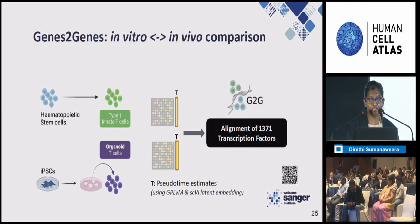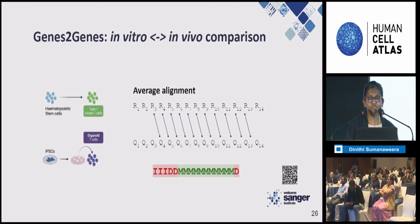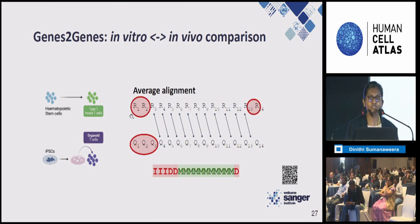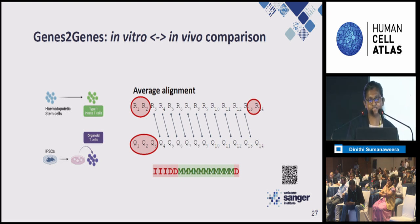We aligned these two datasets in terms of 1,371 transcription factors to find gene-level alignments. The average alignment across time points shows a mismatch at the beginning and at the end between the in vivo and in vitro systems. The beginning mismatch makes sense because the pluripotency stage present in the organoid is not present in the in vivo reference, so many genes mismatch at the early stages. The mismatch at the end implies there may be some difference in the maturity level of the T-cells.